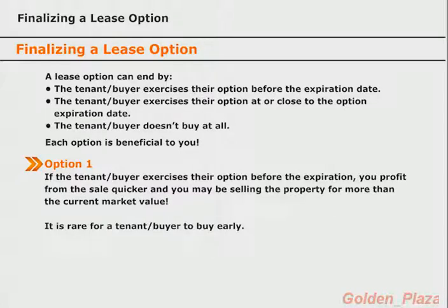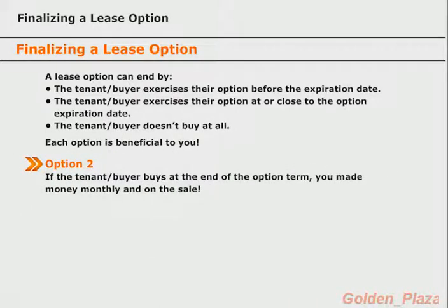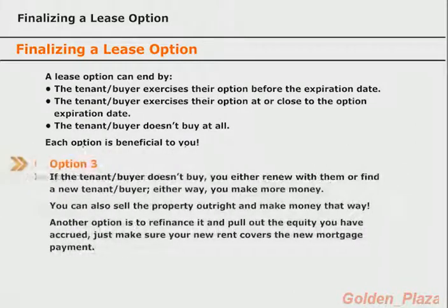If the tenant buyer chooses to exercise their option before it expires, sure, you miss out on the monthly cash flow, but you get a higher profit amount quicker and can then go get another property to lease option. It is rare for a tenant buyer to exercise their option prior to its expiration because most times they need as much time as they can to rebuild their credit or save for a down payment. The second possibility is that the tenant buyer buys at the end of the option term — obviously beneficial since you benefited from the monthly cash flow for an extended period and also make money on the sales price.